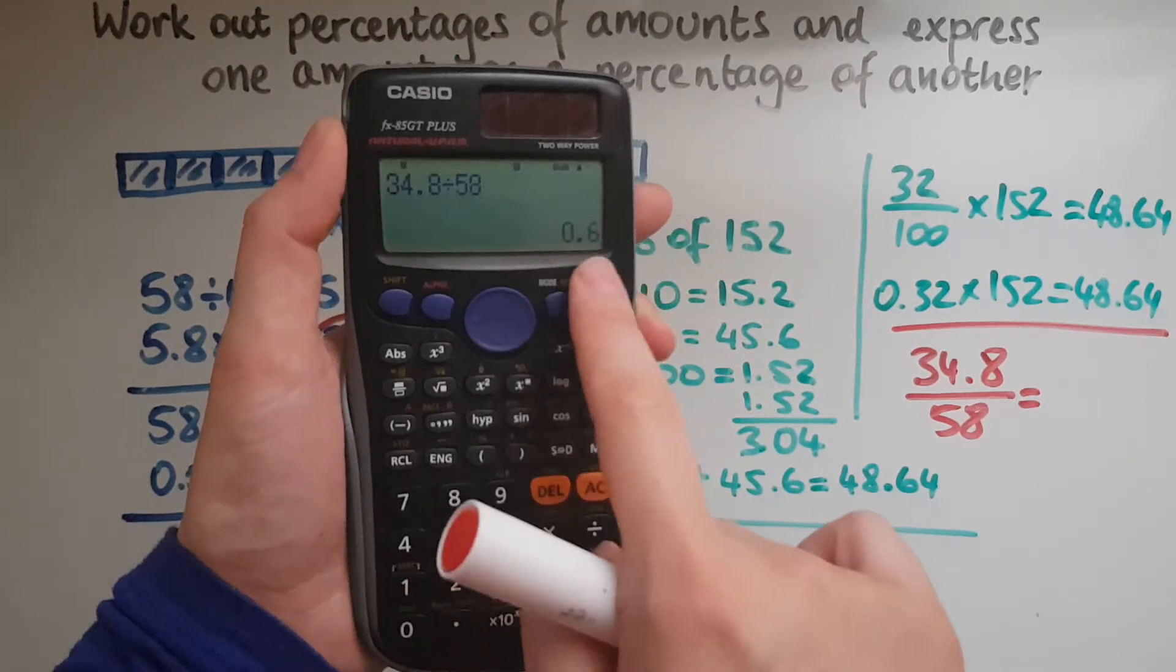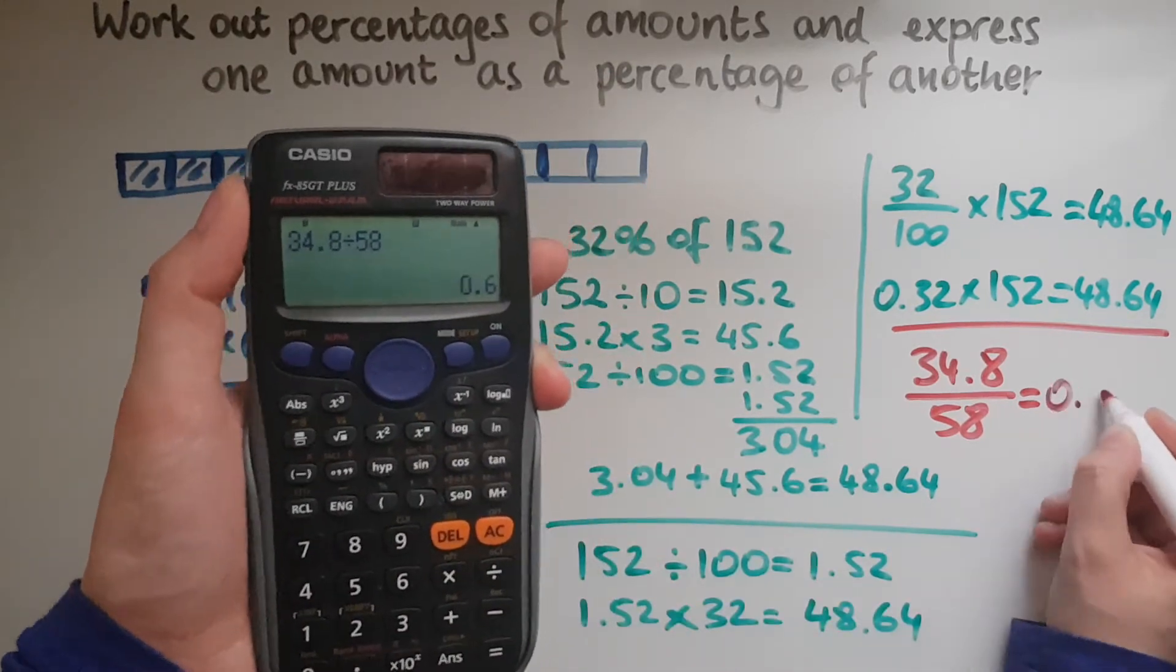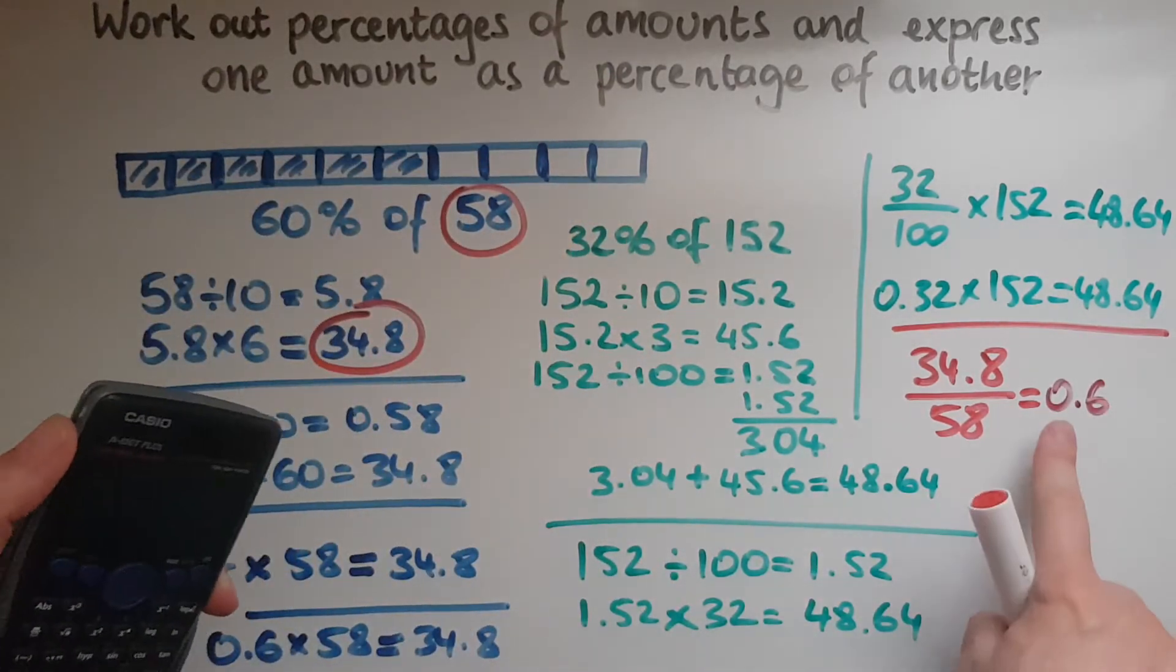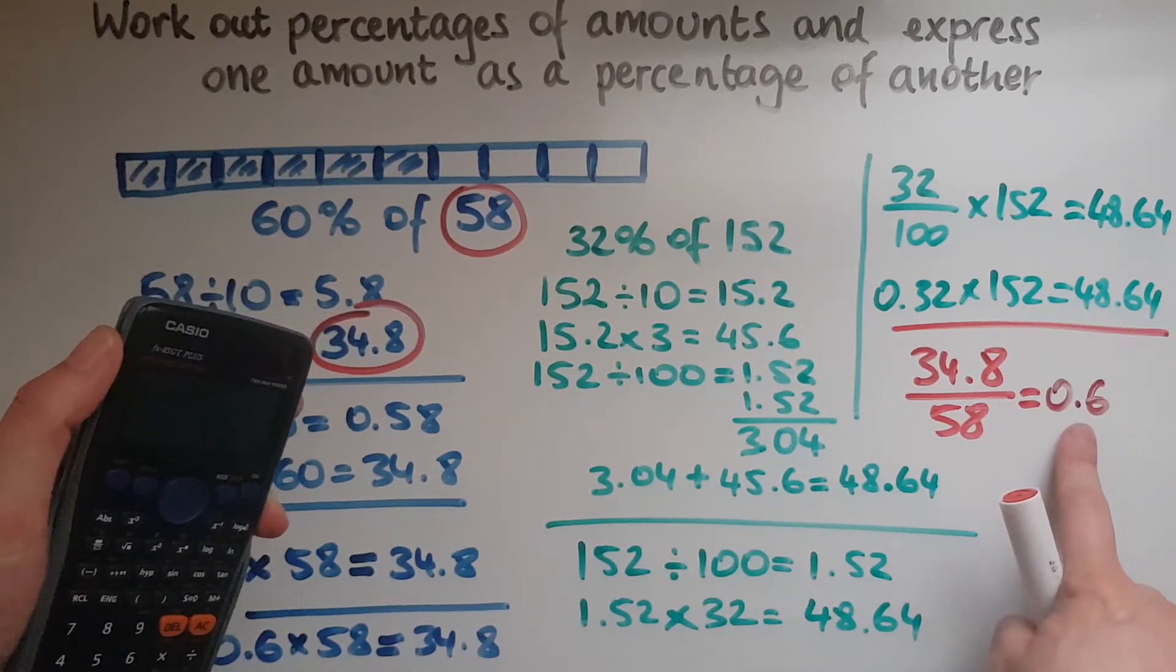That gives us 0.6. So can you see that link now? That's the decimal.